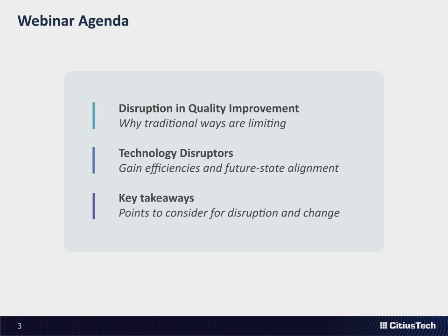We want to talk about why we're talking about disruptions in quality and why it's relevant now. As we start our webinar, we'll go through the changes that have been impacted in the industry, and you'll start to see why disruption will become more and more important. Taking a business-as-usual approach will not lead to the type of results that you have to get to. As we think about this disruption, you have to think about both technology, people, and process. We'll go through the technology pieces, but also the implication on people and process as a result of that, and then go into the key takeaways of what you can take back to your organization—not just for right now, but for the next year or five years.